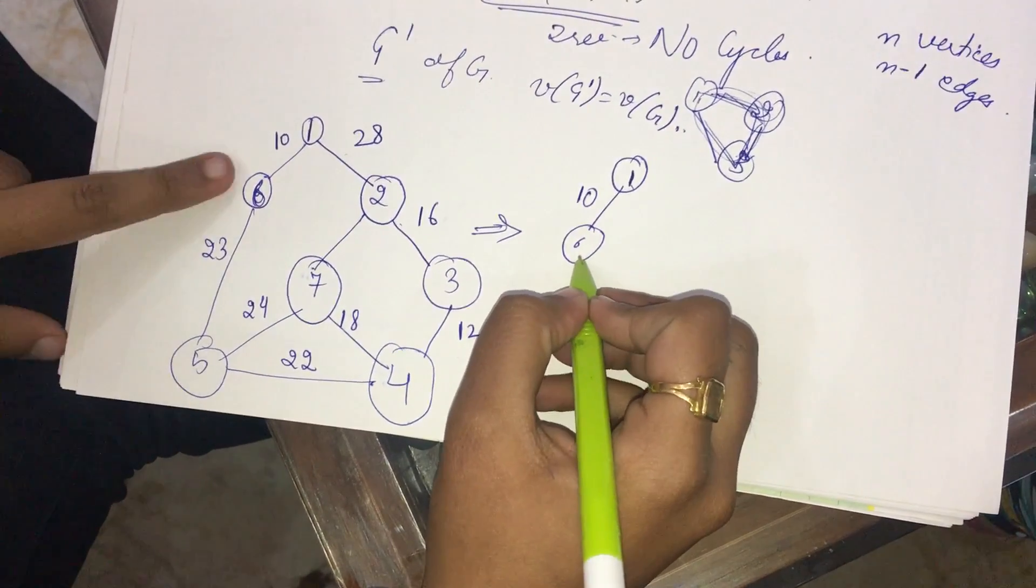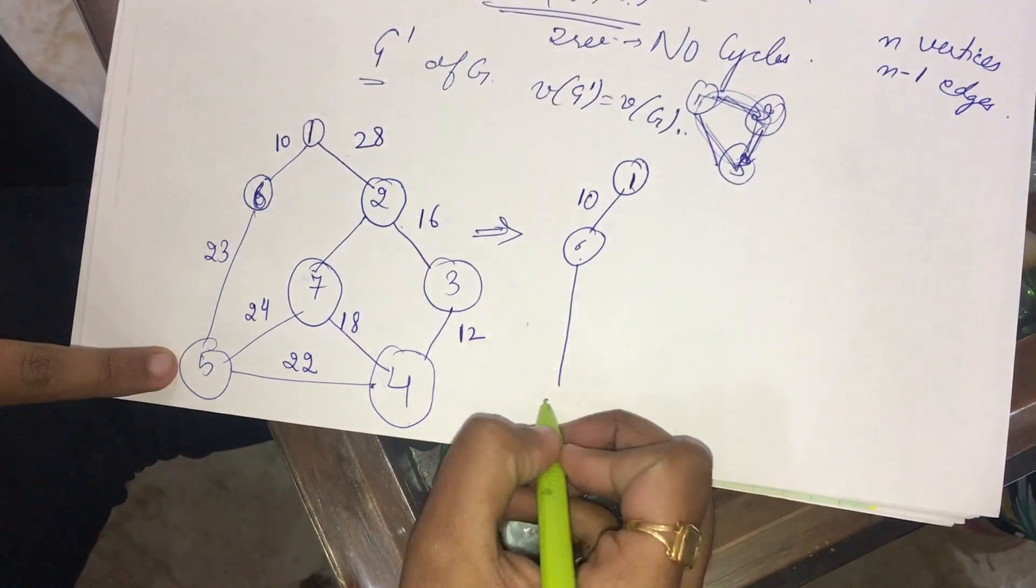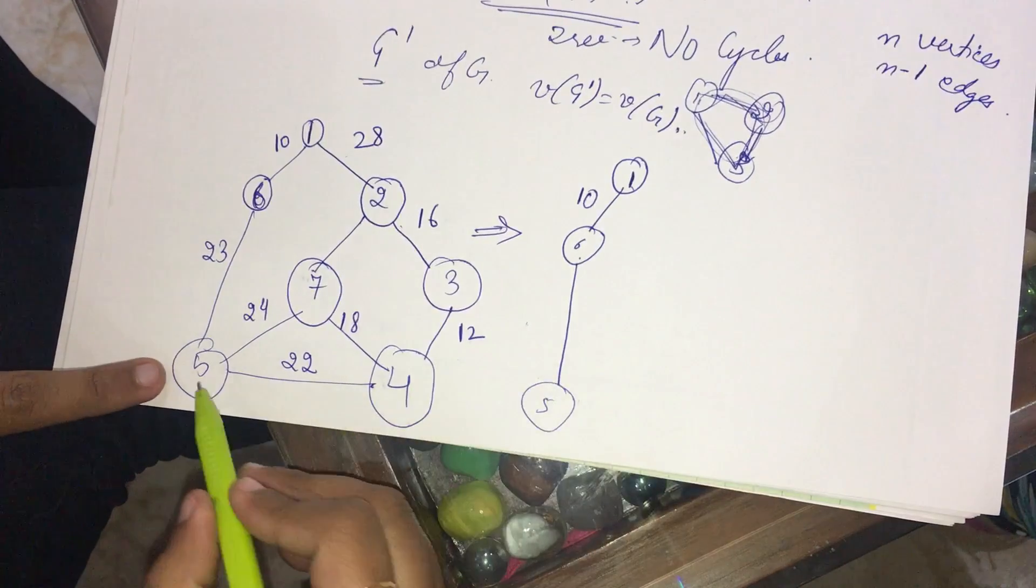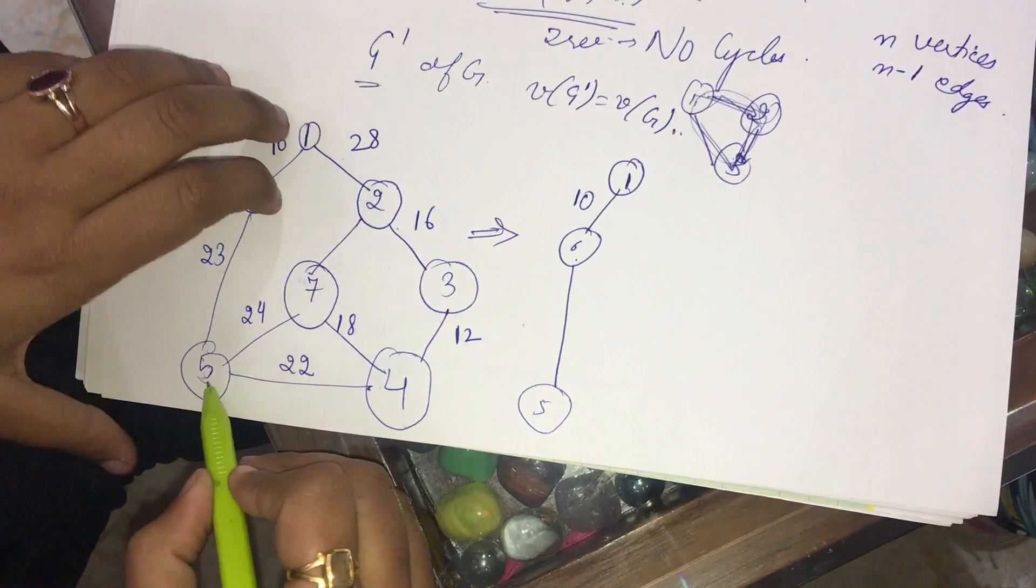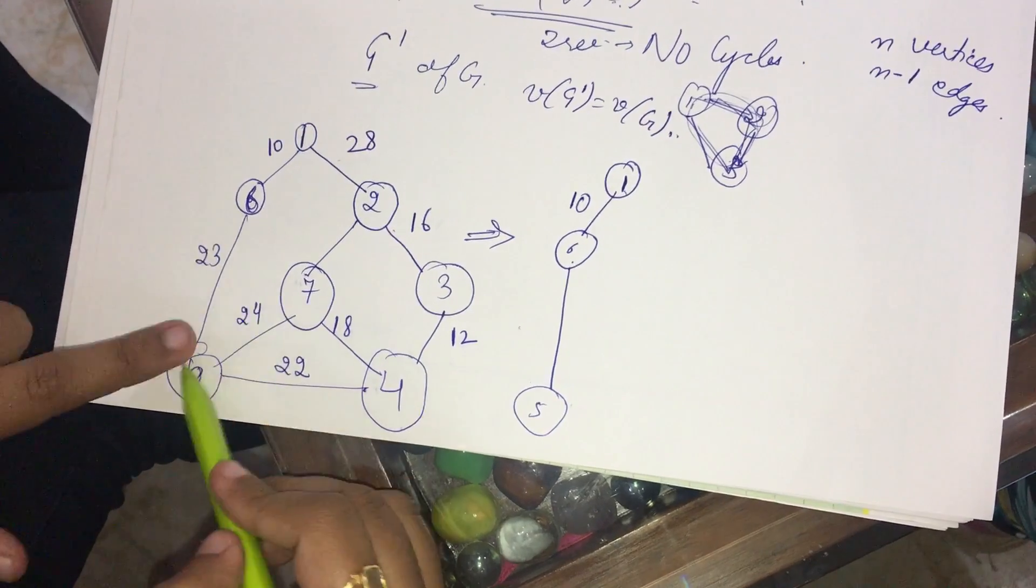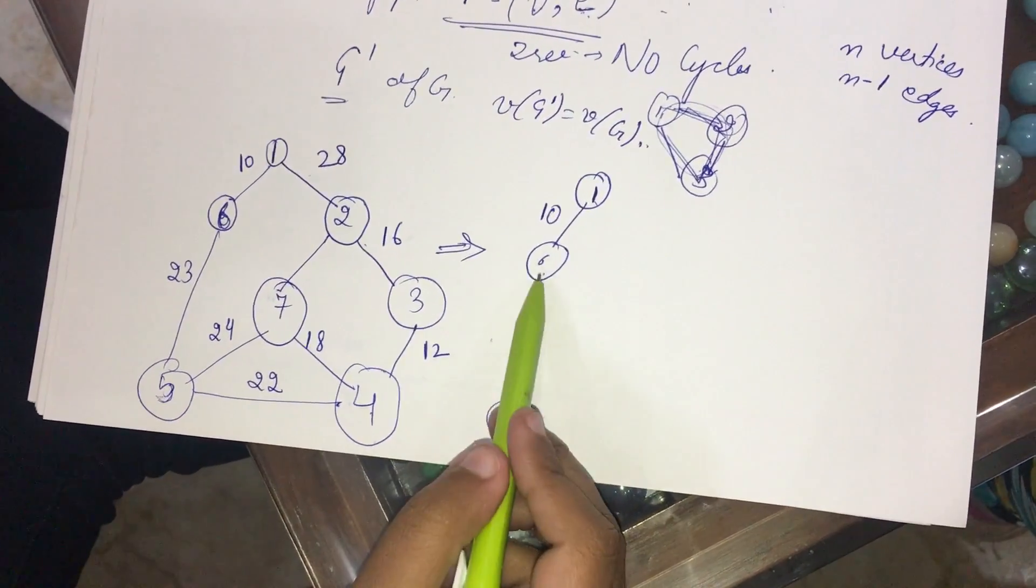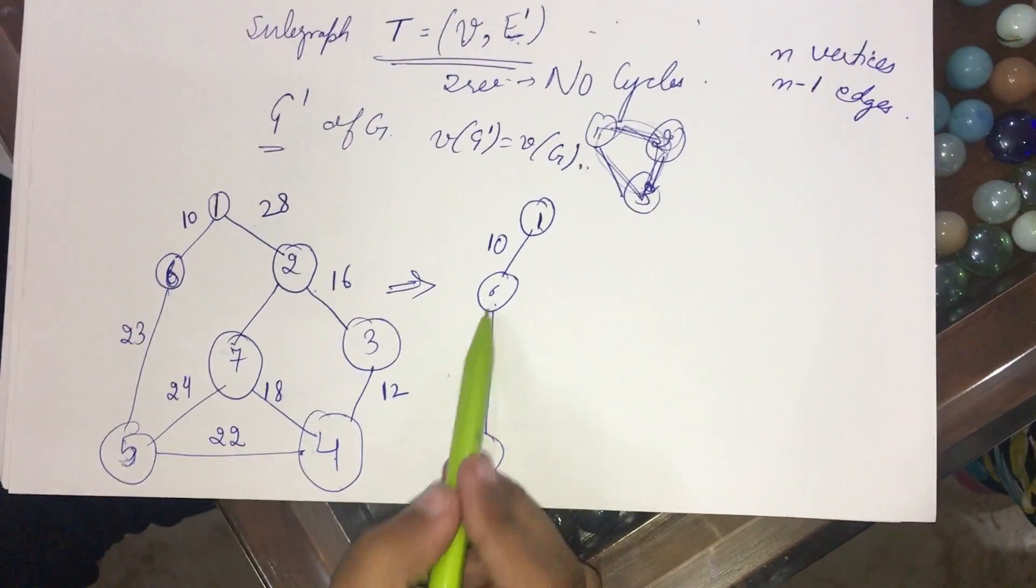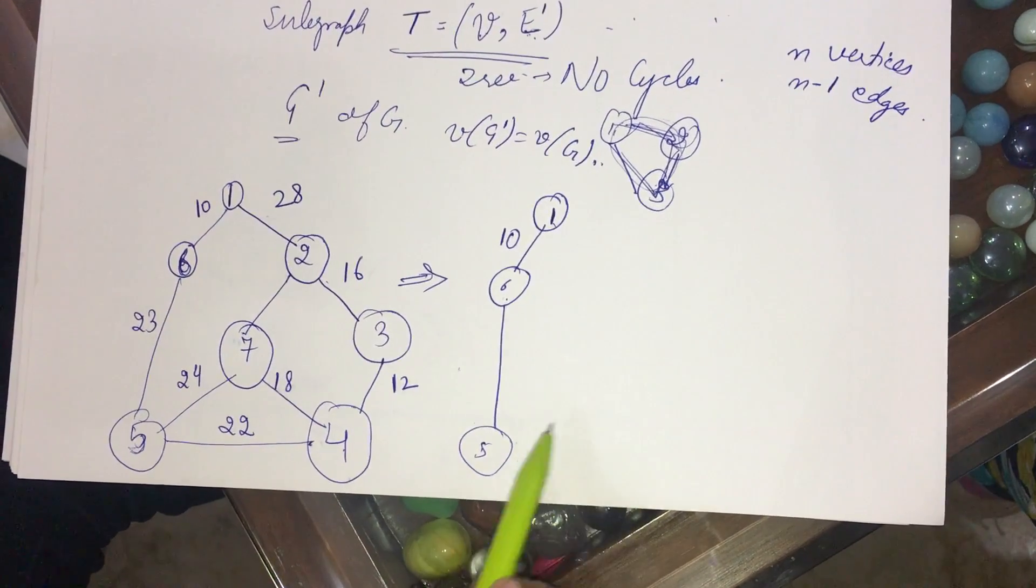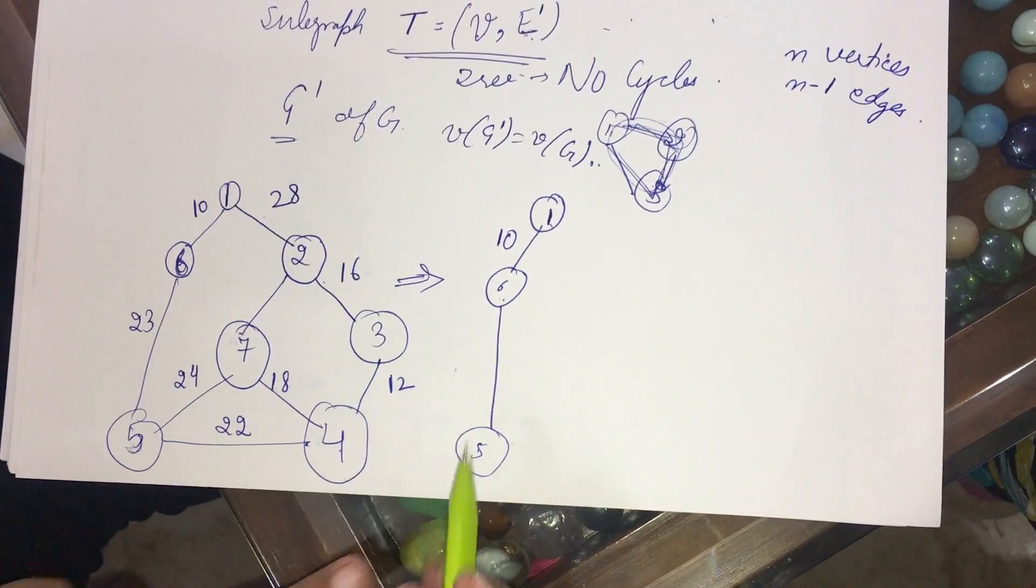When I reach 6, I have only one path, that is 5. And when I go from 5, from 5 I can go to 6, 7, or 4. But if I go to 6, there is no logic of going from 5 back to 6. Why? Because I have to traverse more edges, more vertices also. So I choose the smaller of 24 and 2, that is I choose 4.